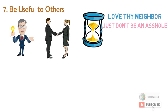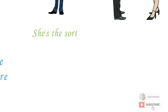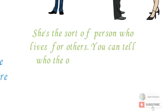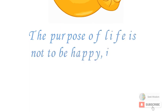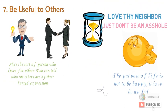But the golden rule can trip you up if your neighbors don't want to be treated the way you do. You can become an asshole by being overly helpful, too. C.S. Lewis noted this in his 1942 classic Screwtape Letters. She's the sort of person who lives for others. You can tell who the others are by their hunted expression. So a better way to think is in terms of usefulness. The purpose of life is not to be happy. It is to be useful, wrote Ralph Waldo Emerson.